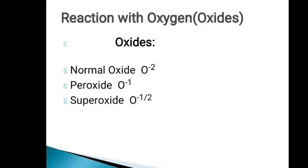The next topic is the reaction of period three elements with oxygen. When period three elements react with oxygen, three types of oxides can form: normal oxide (oxygen with minus 2 charge), peroxide (oxygen with minus 1 charge), and superoxide (oxygen with minus 1/2 charge).